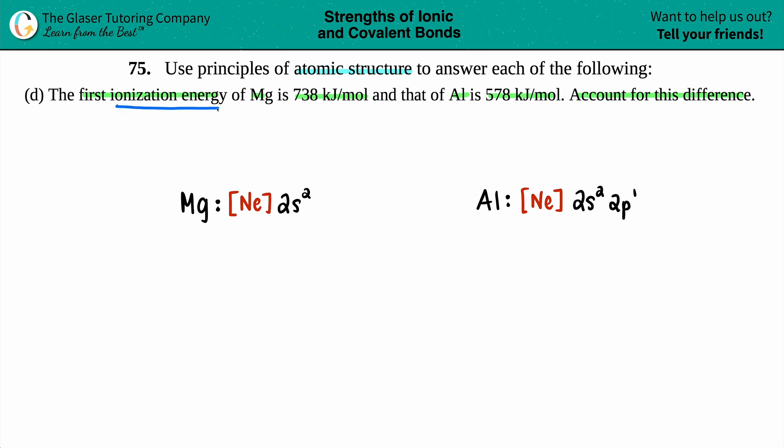Let's write out the ionization energies. I'm just going to say that the ionization energy is IE. The IE for magnesium they said was 738 kilojoules per mole, and the ionization energy for aluminum is 578. Account for this difference.